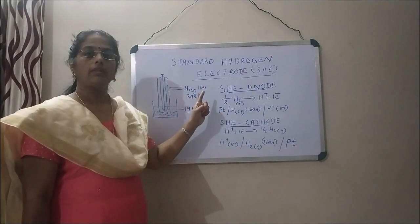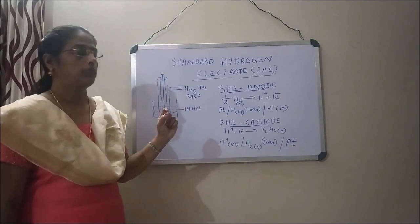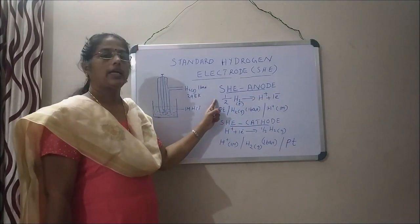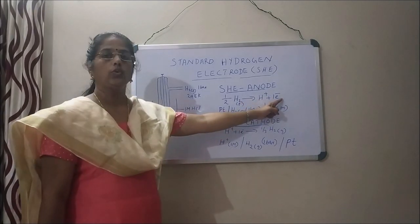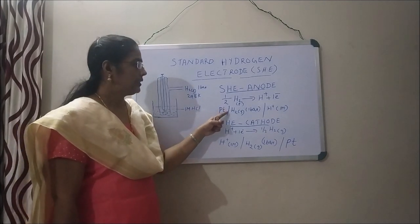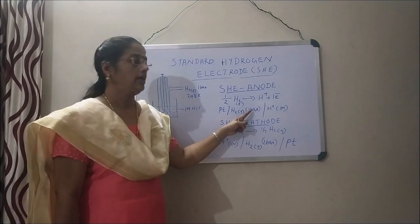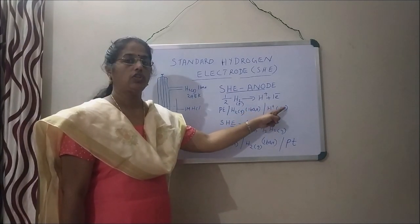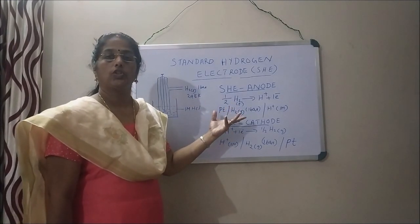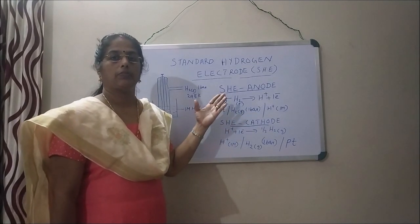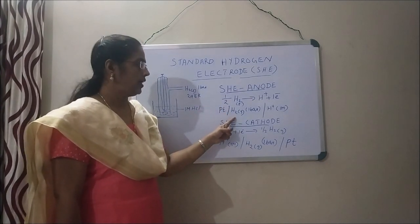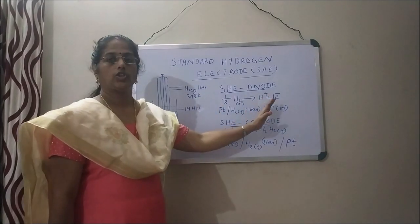When SHE acts as anode, the half cell reaction is: ½H₂ → H⁺ + 1 electron. That is oxidation occurring at the anode. The half cell representation is: Pt | H₂(g, 1 bar) | H⁺(1 M). Since gases are poor conductors of electricity, a conductor is needed, and the conductor here is platinum. So the representation of the anode is: Pt | H₂(g) | H⁺(1 M).